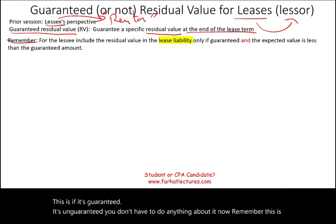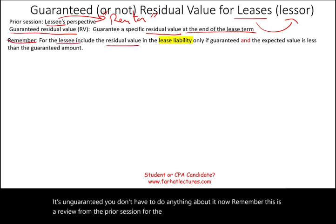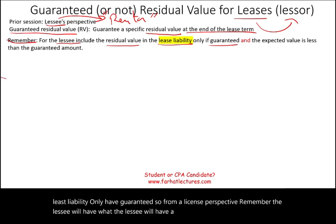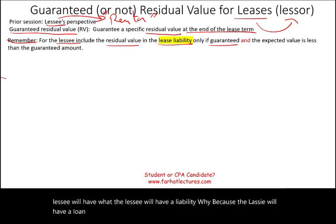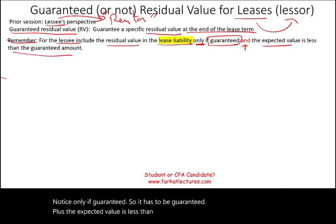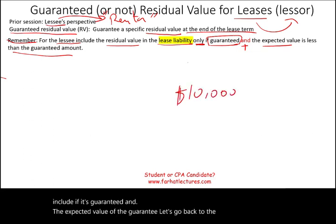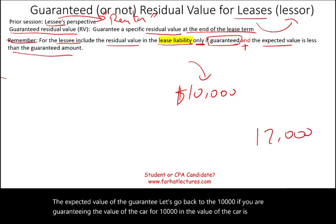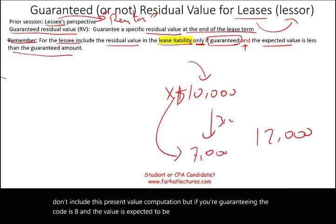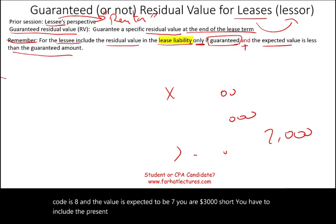This is a review from the prior session. For the lessee, include the residual value in the lease liability only if guaranteed. The lessee has a liability, and they include the residual value only if it's guaranteed and the expected value is less than the guaranteed amount. For example, if you guarantee $10,000 but the car is worth $12,000, you don't include it. But if you guarantee $8,000 and the car is expected to be worth $7,000, you include the present value of the $3,000 shortfall.